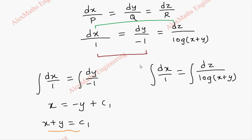Already from this expression we know the x plus y is c1. So by replacing that we get integral dx equal to integral dz by log c1. Log c1 is a constant.